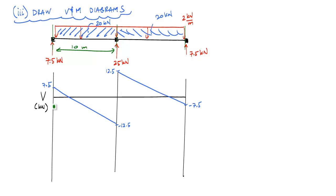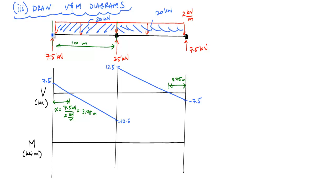Where the shear crosses zero is important because it's a local maximum for the moment diagram. Starting at 7.5 kN and decreasing at a rate of 2 kN per meter, the shear reaches zero at x = 7.5 / 2 = 3.75 meters from A. By symmetry, the same zero crossing occurs 3.75 meters from C on the right span.